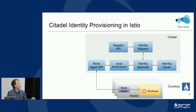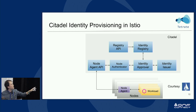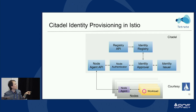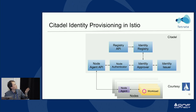This is the identity provisioning flow in Istio. The Citadel components are shown as green boxes. Each service instance with a sidecar Envoy proxy deployed talks to the node agent, and the node agent talks to Citadel via the node agent API. That authenticates the node — which is a VM, bare metal machine, or Kubernetes node. It goes through the authorization process for the identity. The XOS controller provides information to Citadel, and Citadel communicates with the node agent.